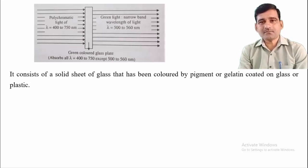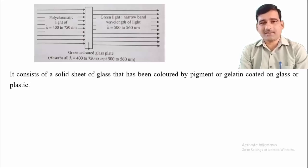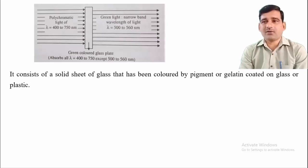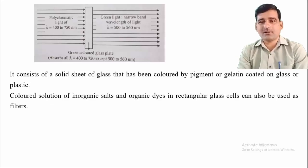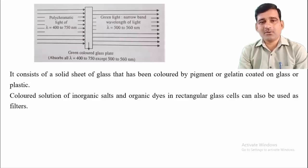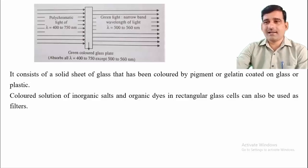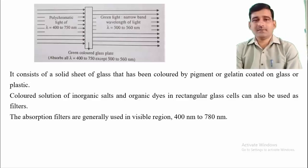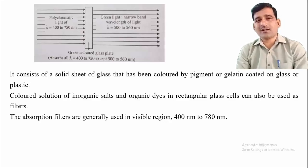The construction of an absorption filter is simple: it consists of a solid sheet of glass colored by means of pigment, or gelatin coated on glass or plastic. Different color pigments — green, red, black, blue, violet — are coated on a glass plate, since every color has the capacity to transmit a particular wavelength and absorb all others. Colored solutions of inorganic salts or organic dyes can also be used. These absorption filters are generally used in the visible region, 400 to 800 nanometers.